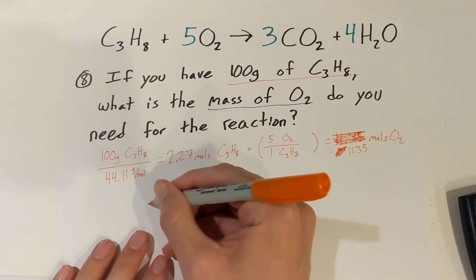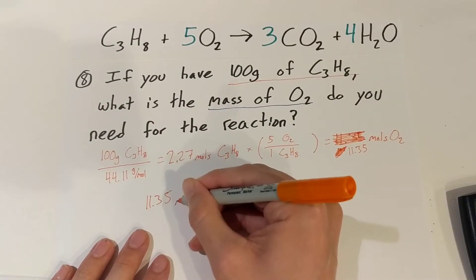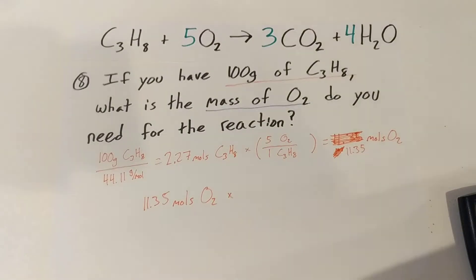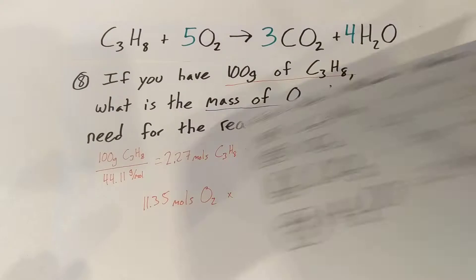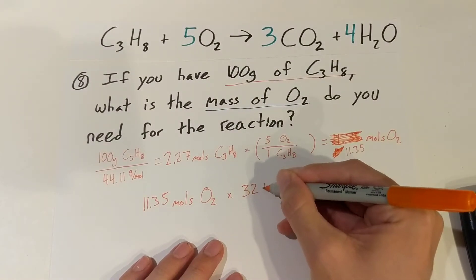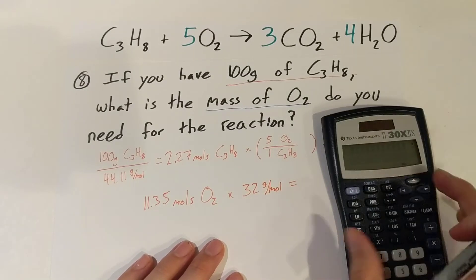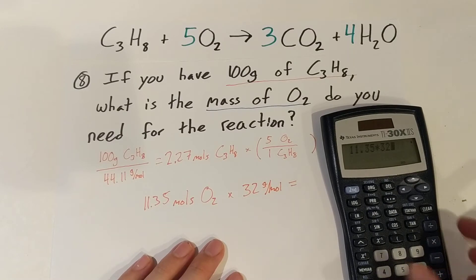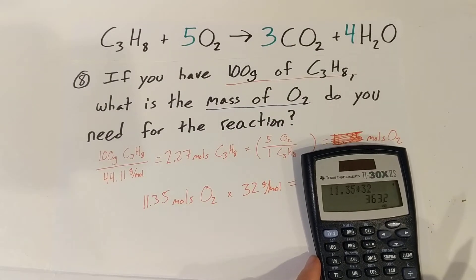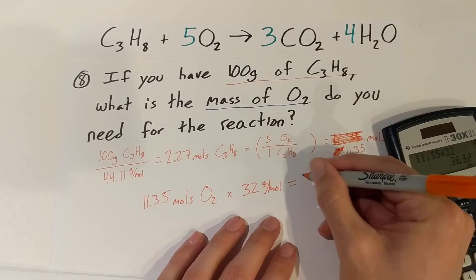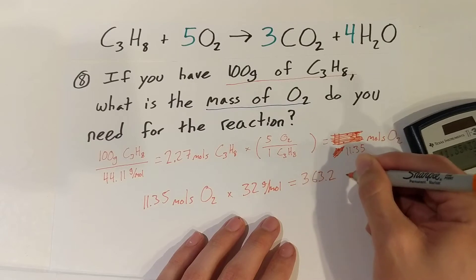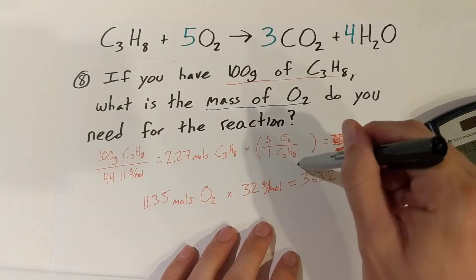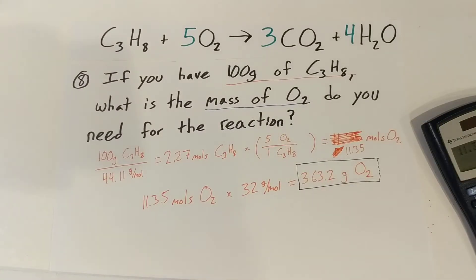Our last step: we've got 11.35 moles of oxygen, and we just have to multiply by our molar mass — that's 32 grams per mole. Throwing that in the calculator: 11.35 times 32. Our answer is 363.2 grams of oxygen. So that is our answer. These are three-step problems and do take a little bit longer.